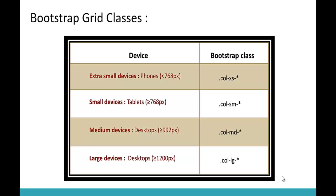Bootstrap includes several grid classes to create layouts for different devices like mobile devices, tablets, laptops, and desktops. There are 4 grid classes in Bootstrap: .col-xs, .col-sm, .col-md, and .col-lg. 'Col' stands for column, XS for extra small, SM for small, MD for medium, and LG for large. The asterisk represents the number of columns you are going to use. We will discuss these classes in coming sessions with examples.